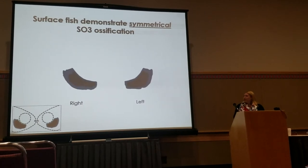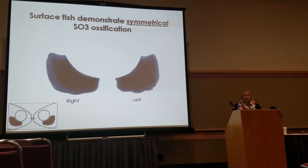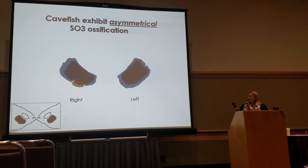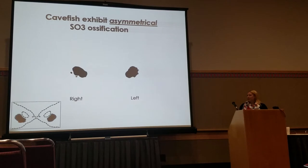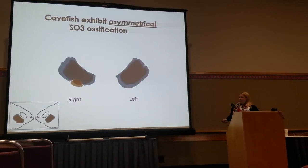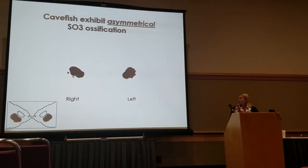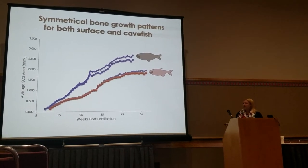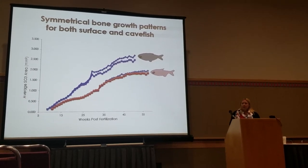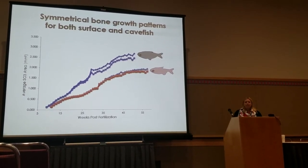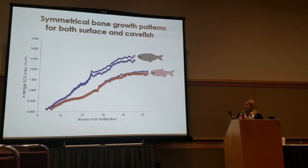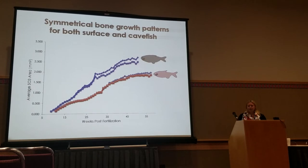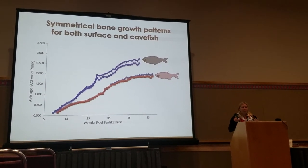We also looked at symmetry during ossification. In the surface fish, the left and right sides grow very uniformly in both shape and size. In the cave fish, we got differences in the number and placement of secondary ossification centers, which resulted in the asymmetry we expected to see. Interestingly, when looking at bone size over time, the cave fish — despite fragmentation — actually had very symmetrical growth in terms of area, while surface fish showed a little more asymmetry in size. This raises the question of whether that is just formative asymmetry from developing on the right and left.